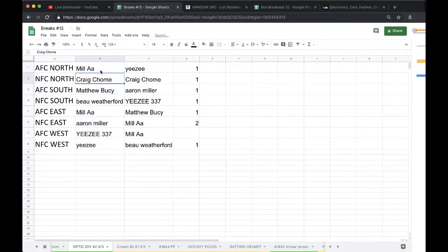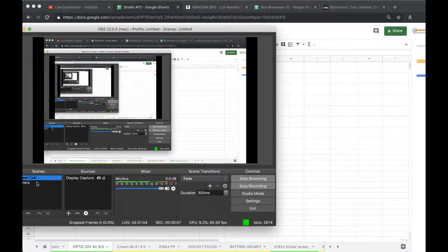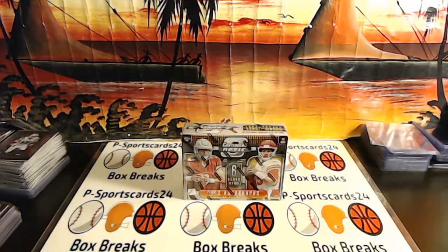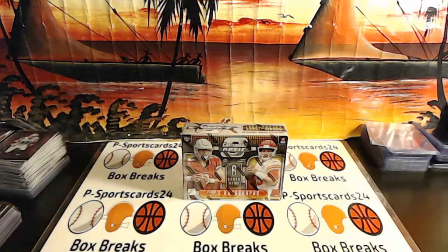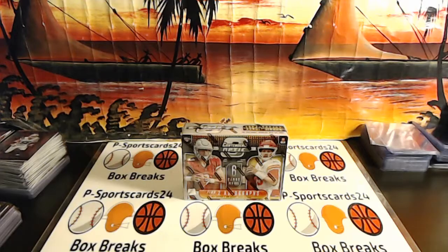Easy Young Bonner, five times. Aaron AFC North, Craig NFC North, Matt AFC South, Bo NFC South, Aaron AFC East, Aaron NFC East, Easy AFC West, Easy NFC West. Alright guys, good luck.